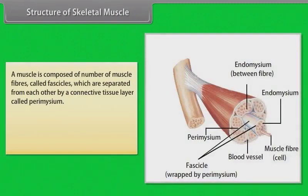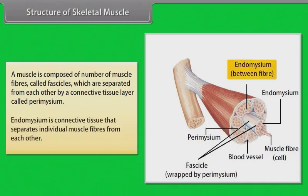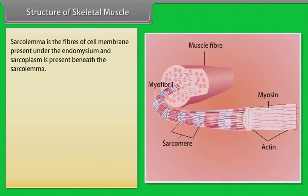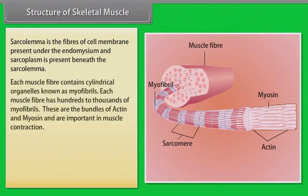Structure of skeletal muscles. A muscle is composed of a number of muscle fibers called fascicles, which are separated from each other by a connective tissue layer called perimysium. Endomysium is connective tissue that separates individual muscle fibers from each other. Sarcolemma is the cell membrane present under the endomysium, and sarcoplasm is present beneath the sarcolemma.